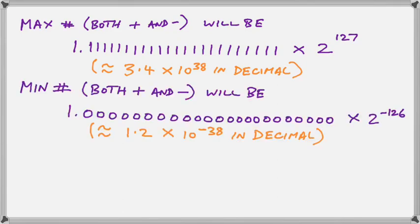What about the minimum number? The minimum number — we can't go below zero, and we can never actually get zero, because that leading 1 is not stored in the number. So we have 1 followed by 23 zeros, and here we have 2 to the minus 126. This number is, of course, very very small — much smaller than 1 — and it works out in decimal to approximately 1.2 × 10 to the minus 38th power. So we have quite a range of numbers, even though we cannot represent them all exactly in the system.